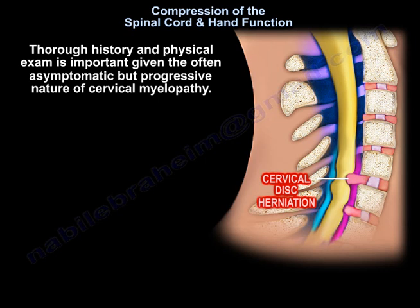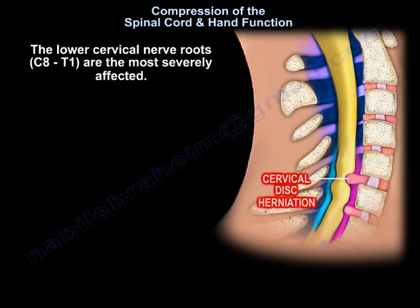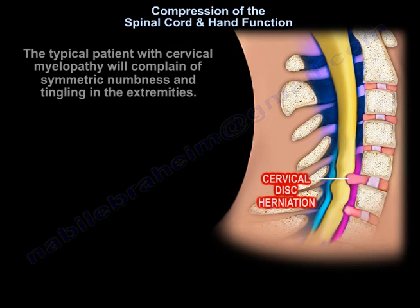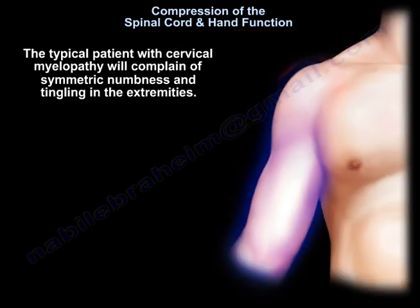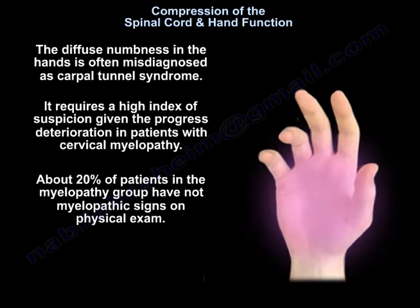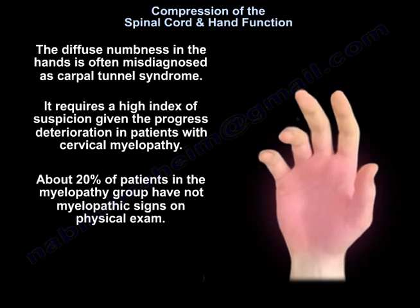A thorough history and physical exam is important given the often asymptomatic but progressive nature of cervical myelopathy. The lower cervical nerve roots, C7-T1, are the most severely affected. The clinical presentation of myelopathy is highly variable. The typical patient will complain of symmetric numbness and tingling in the extremities. The diffuse numbness in the hands is often misdiagnosed as carpal tunnel syndrome, requiring a high index of suspicion given the progressive deterioration.